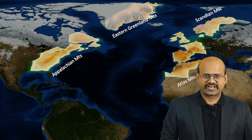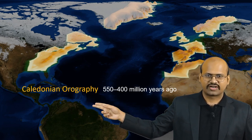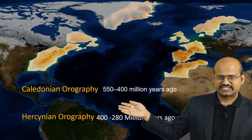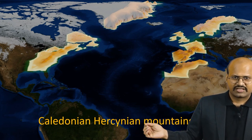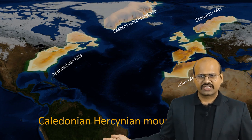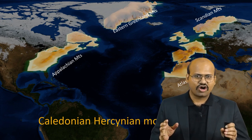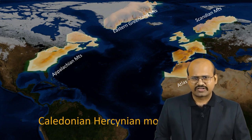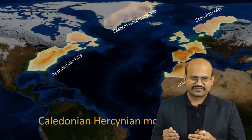All these mountains were created through two orogenic processes. The first was the Caledonian orogeny, which occurred from around 550 to 400 million years ago, and the second was the Hercynian orogeny, which lasted from 400 to around 300 million years ago. Therefore, these mountain ranges are called Caledonian and Hercynian Mountains. The similarity in these mountains indicates that they were all formed together as one single block. Therefore, North America, Greenland, Europe and Africa must have been located side by side when these mountains were formed.